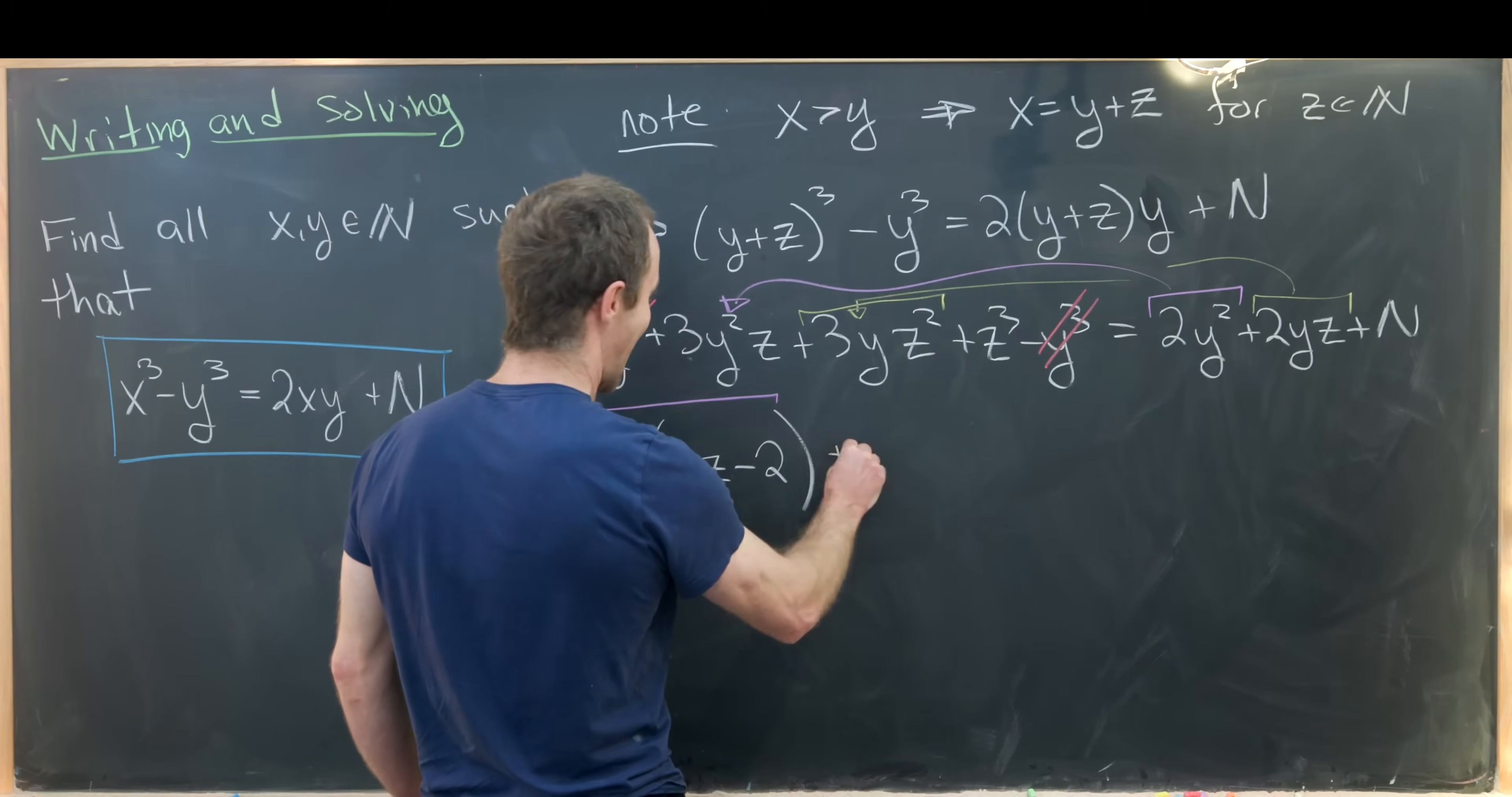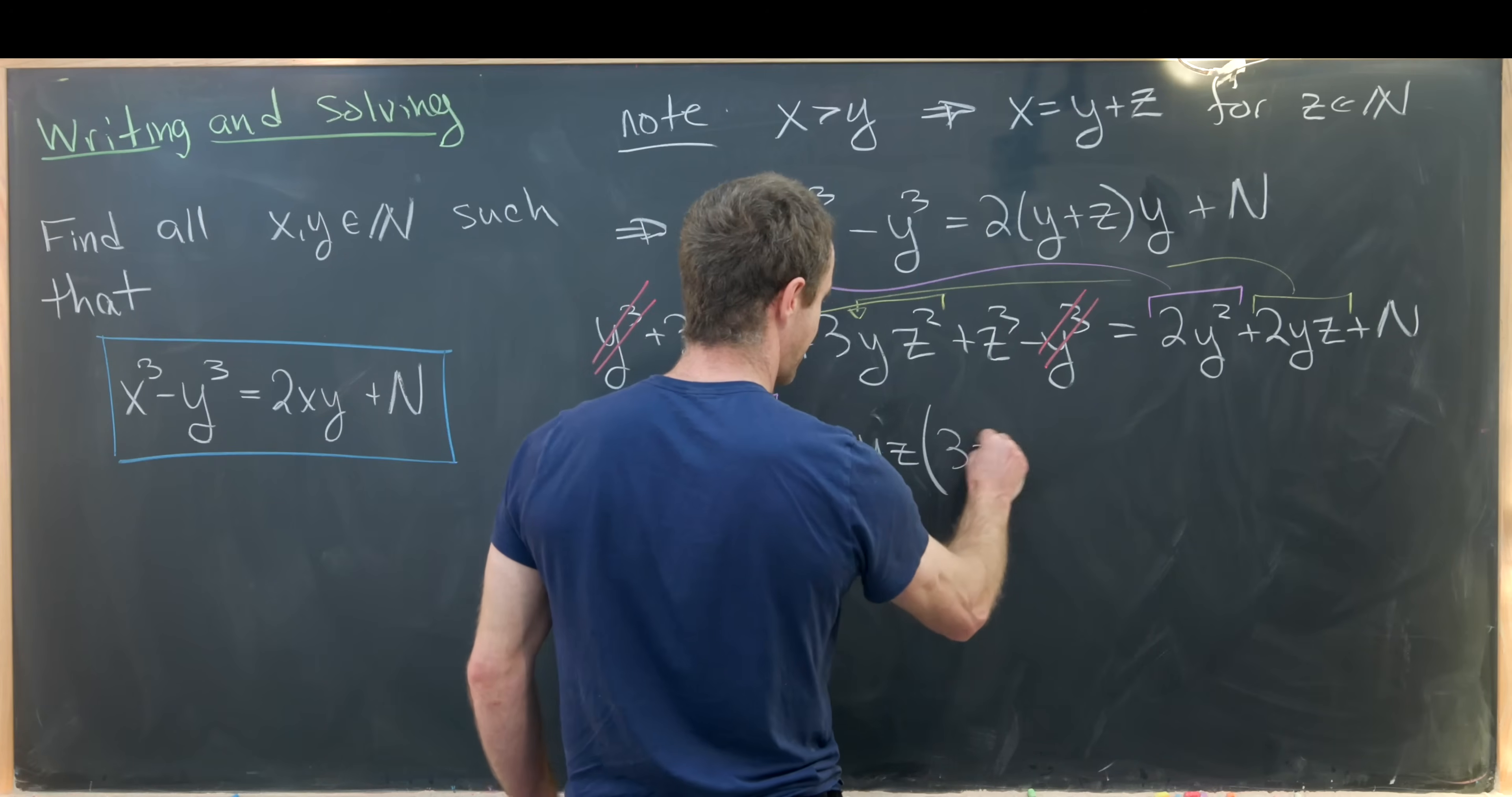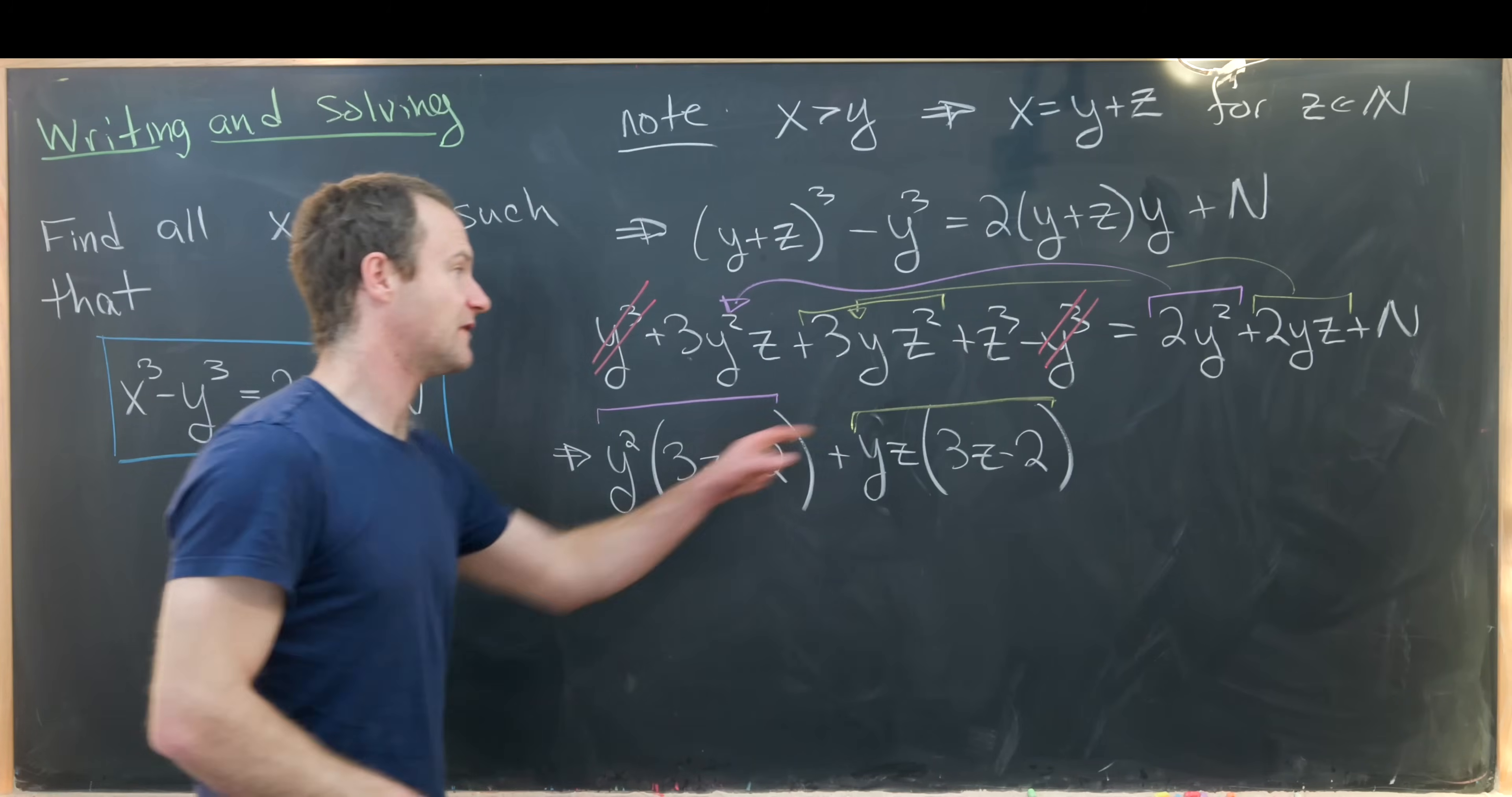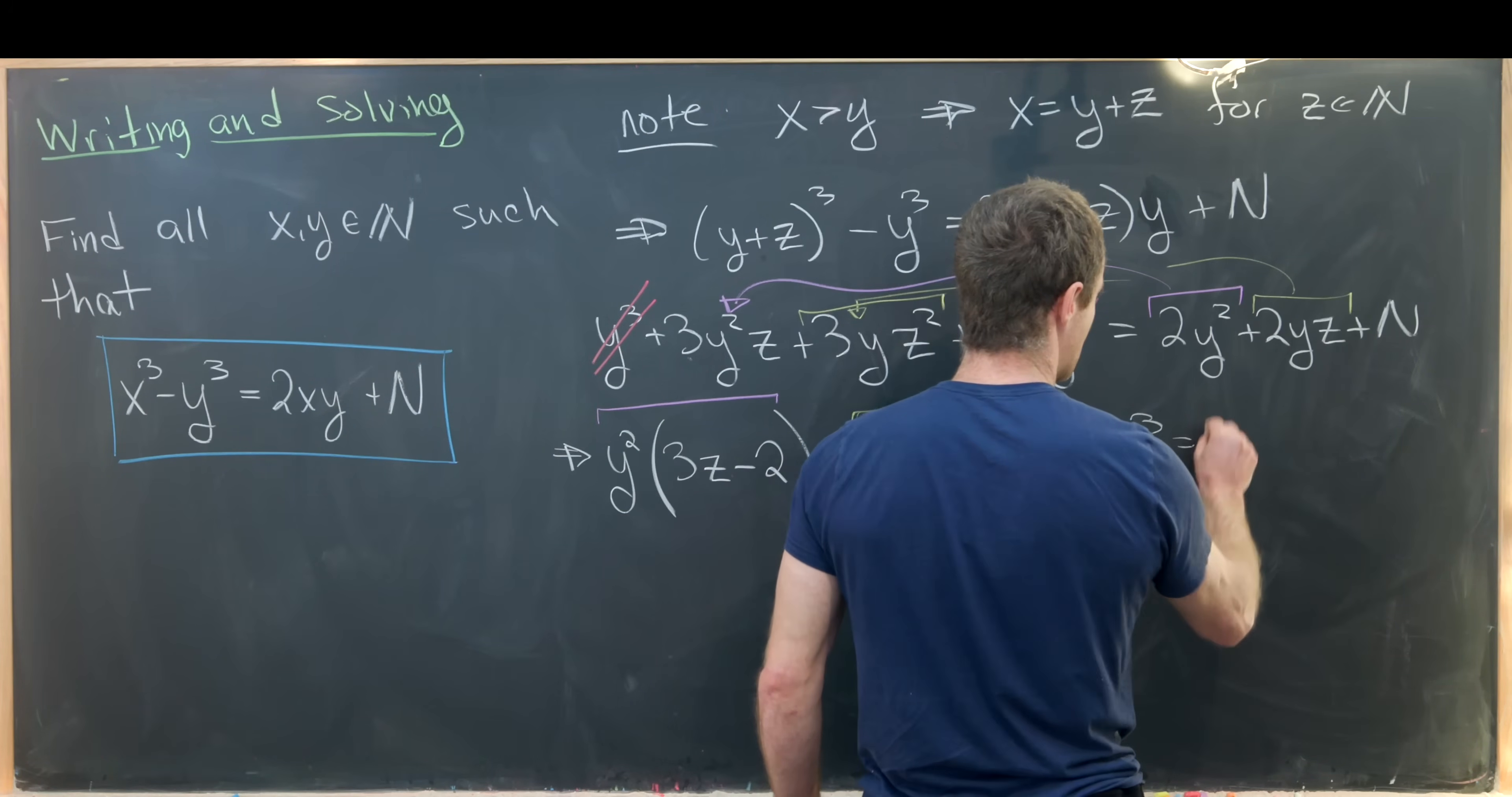And then we'll have that added to yz times (3z - 2). And then finally we bring this plus z³ down equals N.